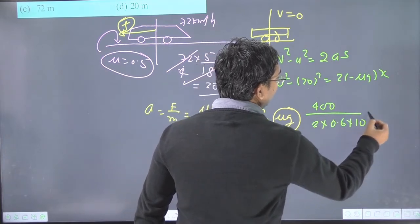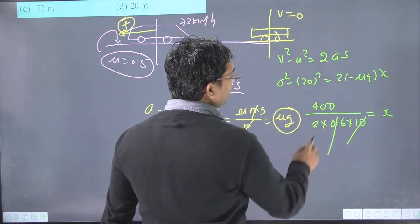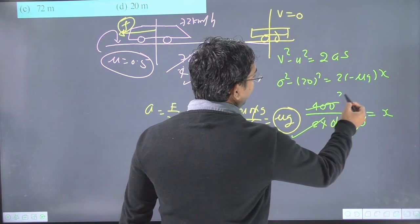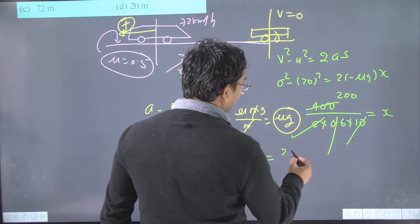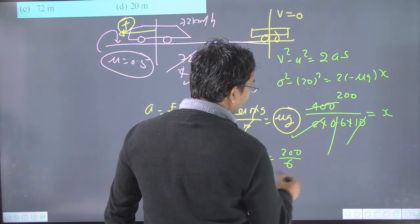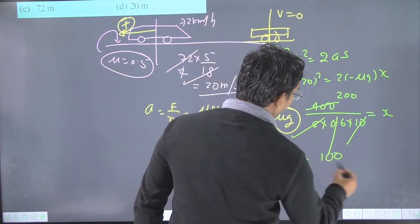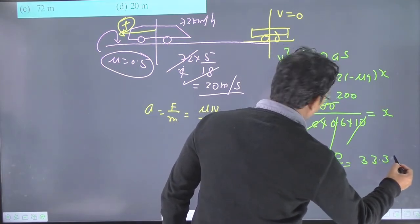This gives us x equals 200 divided by 6, which equals 100 divided by 3, or approximately 33.33 meters.